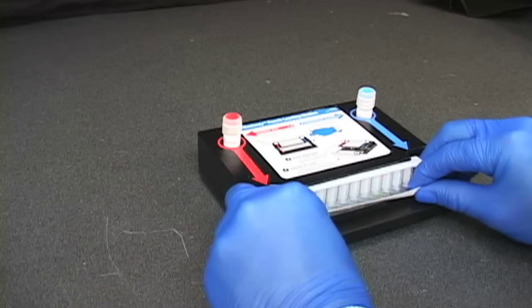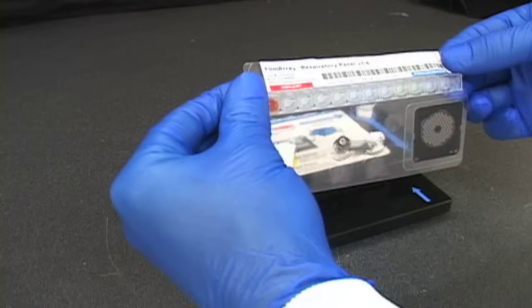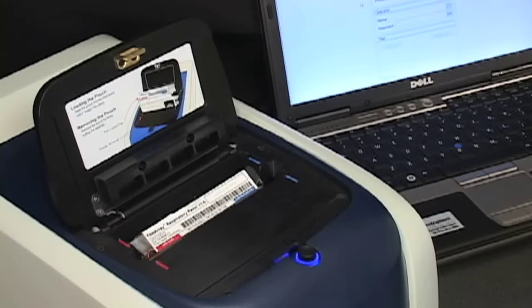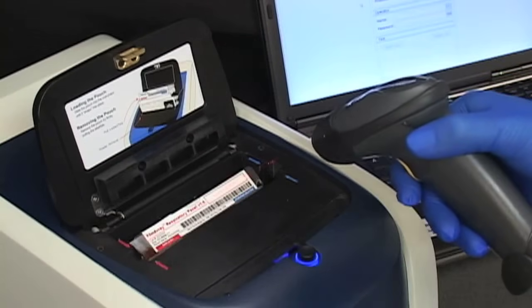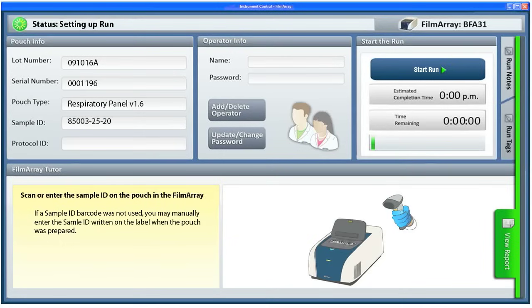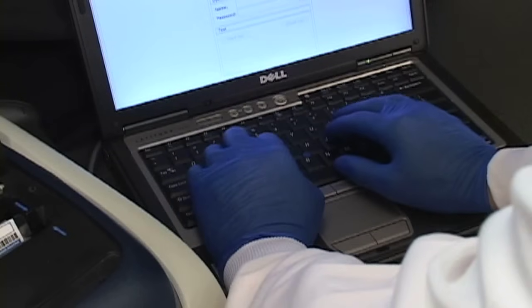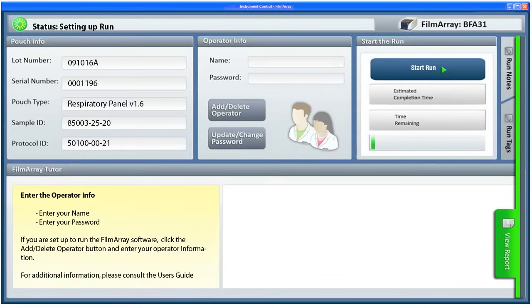The FilmArray instrument is now ready to set up. The FilmArray pouch is loaded into the FilmArray instrument and a barcode reader is used to enter the pouch ID. The sample ID can also be scanned with the barcode reader or entered manually. Last, the user ID and password are entered and then the run is started.